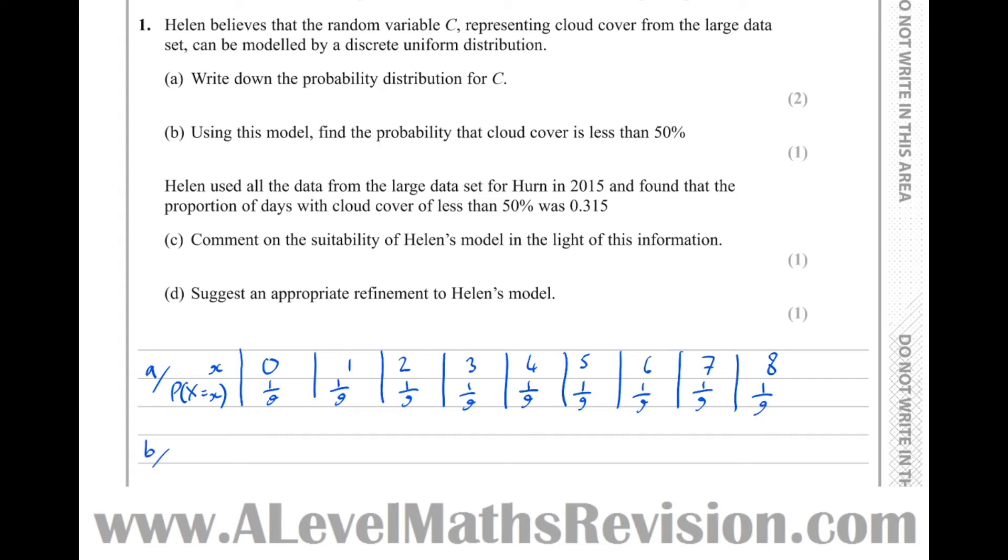Part B: using this model, find the probability that the cloud cover is less than 50%. Well, full cloud cover would be the outcome eight. So less than half of that would be the probability that the cloud cover is less than four, which is these outcomes here. So one ninth plus one ninth plus one ninth plus one ninth equals simply four ninths.